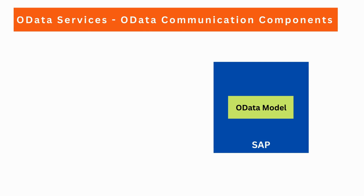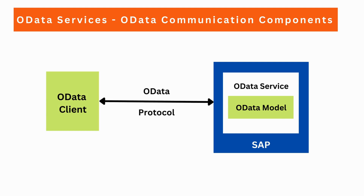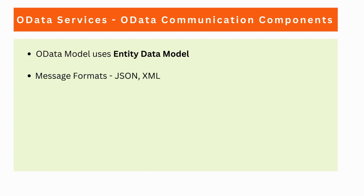Let's now look at the communication components of OData services in SAP. We start with the OData model, then we generate the OData service on top of this model. This OData service can be exposed to the external world, and an OData client uses the OData protocol to invoke the service. In SAP, the OData model uses EDM, which stands for Entity Data Model. OData services use message formats like JSON or XML, and also support URLs for request handling.